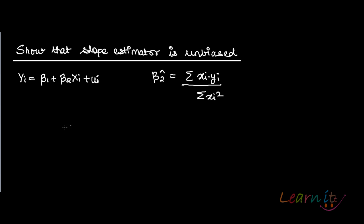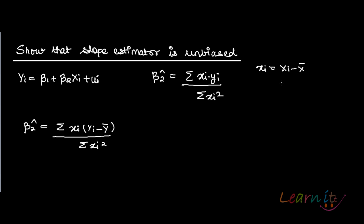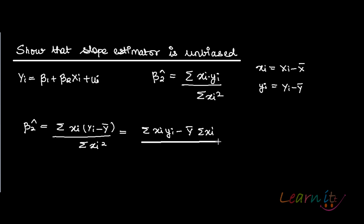This we have already proved. So β₂̂ can be written as summation of xᵢ — in place of yᵢ you can write Yᵢ minus Ȳ — upon summation xᵢ squared. These are just the deviations from mean; small xᵢ is basically Xᵢ minus X̄, and small yᵢ is Yᵢ minus Ȳ. So what you have is summation of xᵢ(Yᵢ − Ȳ) upon summation xᵢ squared.